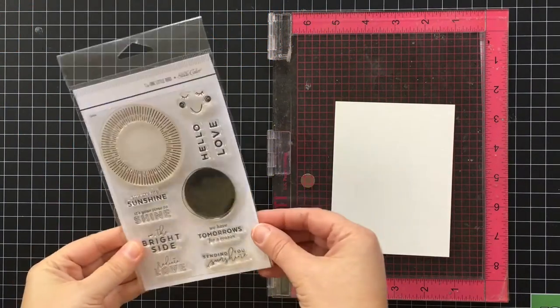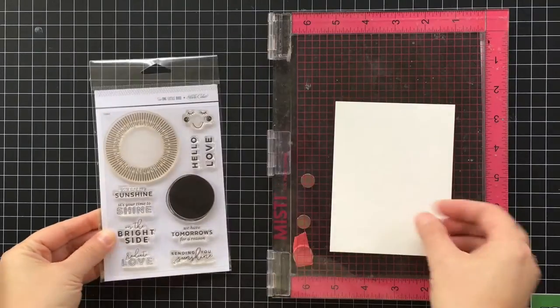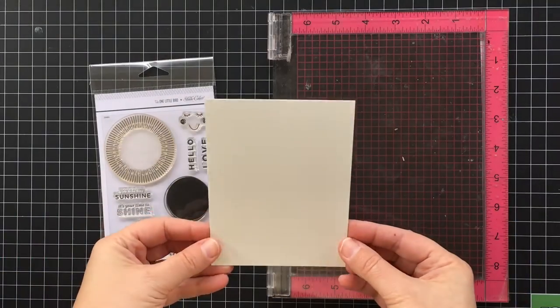I'm going to be working with this Sunburst stamp set by One Little Bird and I'm going to be working with watercolor paper.